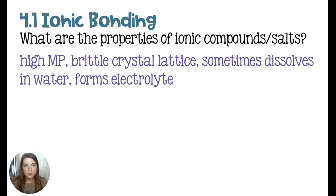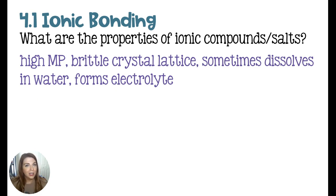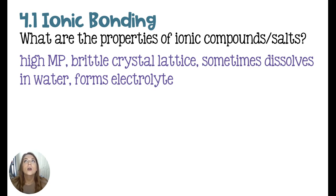The properties of ionic compounds are that they have very high melting points. They form a brittle crystal lattice, meaning that if you break it, it shatters. Most of the time they will dissolve in water, and if they do, they will form electrolytes. They will also form electrolytes if they are molten — the term used to describe ionic salts in the liquid phase, because their melting point is really high.